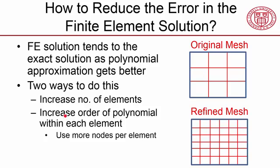The other way is to increase the order of the polynomial within each element, and you do this by using more nodes per element. The ANSYS solver will calculate the temperature not only at the corner locations, but also at the midside nodes.